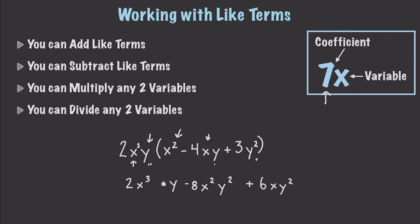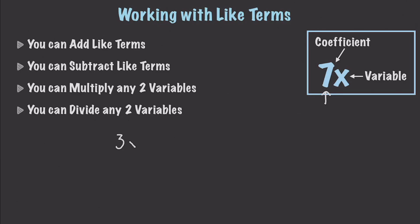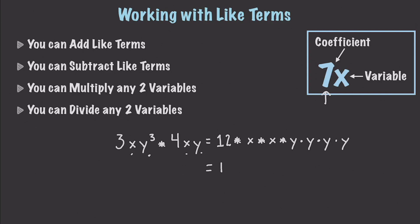Just to reiterate what's going on: let's say we have 3xy³ times 4xy. This is exactly the same as 3 times 4, which equals 12, times x times x times the y's. We write these out and count: how many x's? 1, 2 — so x squared. How many y's? 1, 2, 3, 4 — y to the power of 4. So the answer is 12x²y⁴.